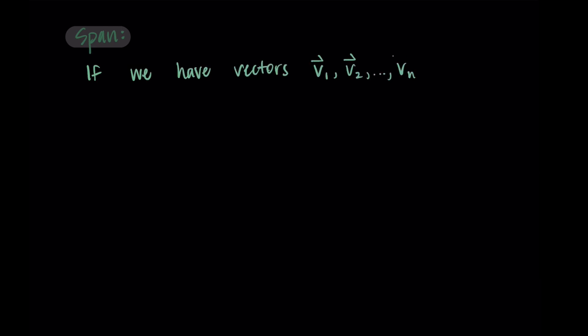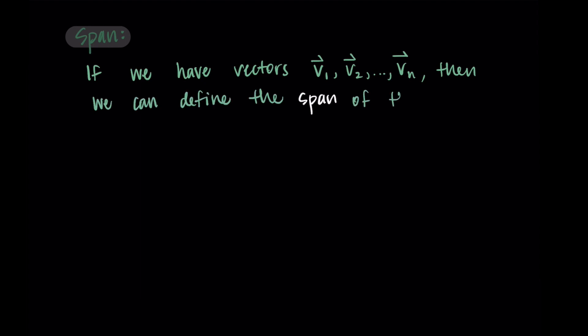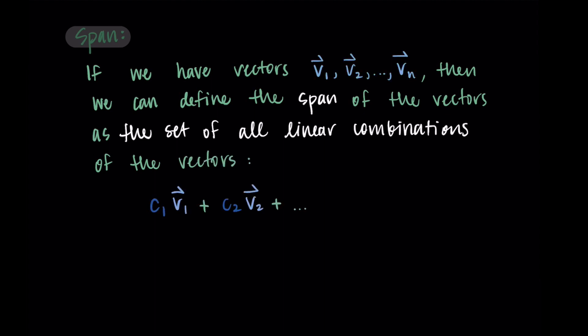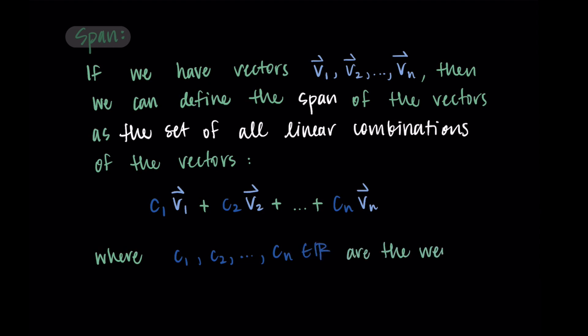Hi and welcome. In this video we're going to go through the basics of what span is and do a general introduction about the topic. Our main definition is that if we have vectors v1 through vn, we can define the span of those vectors as the set of all linear combinations of the vectors. This will look like c1*v1 plus c2*v2 all the way through cn*vn, where these c values c1 through cn are real numbers and they are the weights of the linear combination.